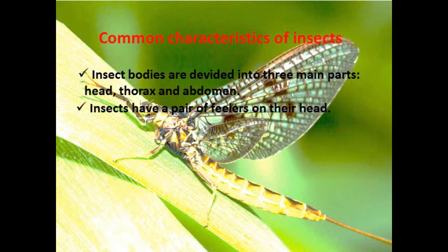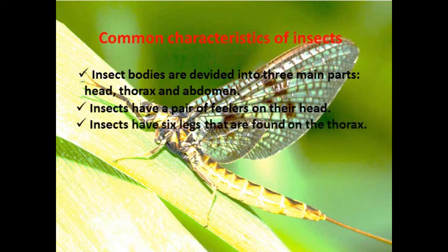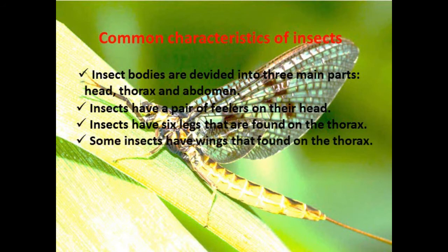Insects have a pair of feelers on their head — antennae. The next characteristic: insects have six legs found on the thorax. So insects have three pairs, or six legs in total, on their thorax. Some insects also have wings found on the thorax. If they have wings, that means those insects can fly.